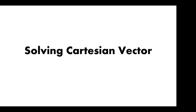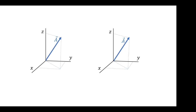To find the Cartesian vector, there are different approaches based on what is given. It's either alpha, beta, and gamma are given, or it's the transverse angle theta and the azimuth angle phi. So in this type of problem, we can solve Cartesian vectors if angles are involved — either the directional angles or the transverse and azimuth angles.